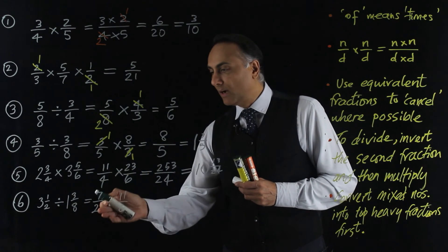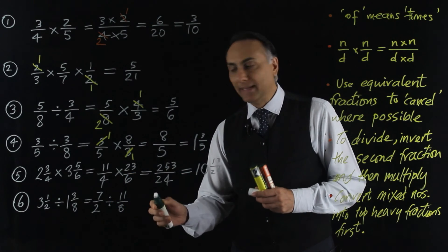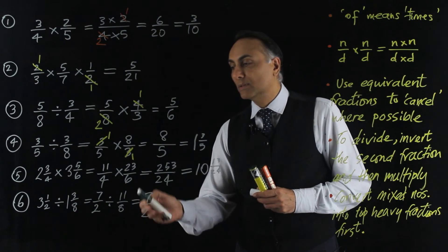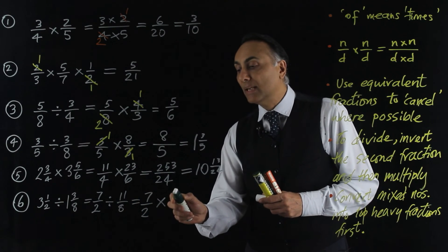So we have seven halves divided by 11 eighths, which we turn into a multiplication. So that's seven halves multiplied by, not 11 eighths, but 8 elevenths.